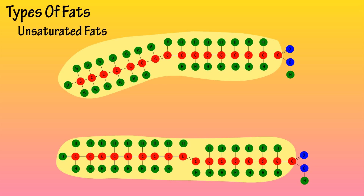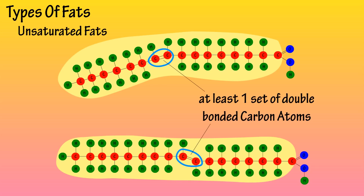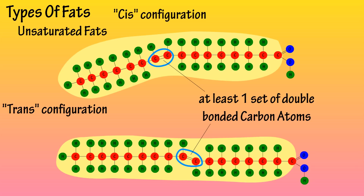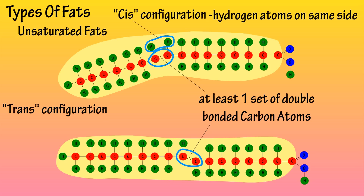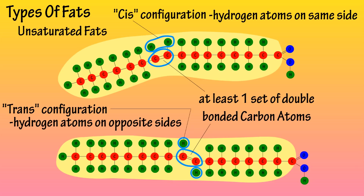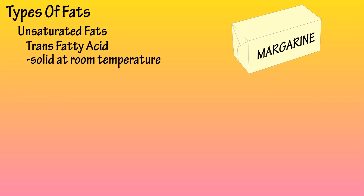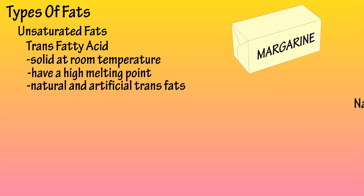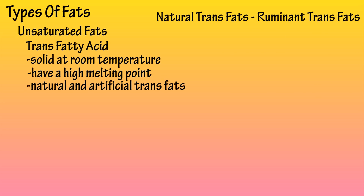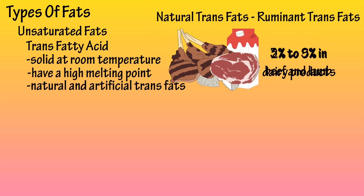Now let's look at unsaturated fats. Unlike saturated fats, unsaturated fats have at least one double bonded set of carbon atoms in their structure. This double bond can take on one of two formations: a cis configuration or a trans configuration. In the cis formation, the hydrogen atoms are on the same side of the double bonded carbon atoms, and in the trans formation, the hydrogen atoms are on opposite sides. Trans fats are solid at room temperature and usually have a high melting point. There are natural and artificial trans fats. Natural trans fats, also known as ruminant trans fats, typically make up two to five percent of the fat in dairy products and three to nine percent of the fat in beef and lamb.